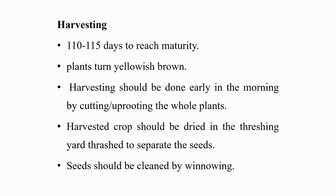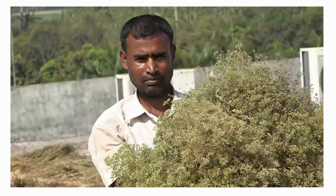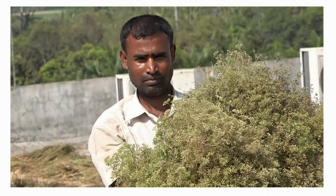The next aspect is harvesting. Generally, cumin crop takes about 110 to 115 days to reach maturity. Crop becomes ready to harvest when plants turn yellowish brown. Harvesting should be done early in the morning by cutting or uprooting the old plants. Harvested crop should be dried in the threshing yard and threshed to separate the seeds. Seeds should be cleaned by winnowing.